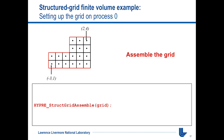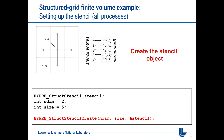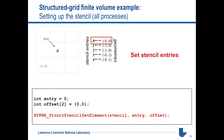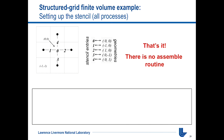To define the stencil, you call create with the stencil size and number of dimensions. For this five-point stencil, you describe the different parts with offset values: (0,0) is the center, (-1,0) is the west coefficient, (1,0) is the east, then south and north. There's no assemble routine for the stencil. The stencil can have any kind of pattern you like.